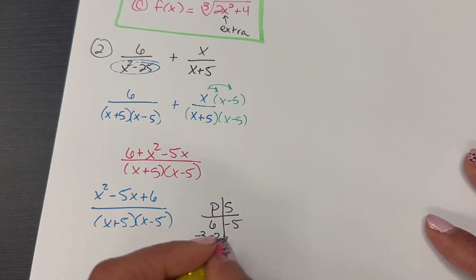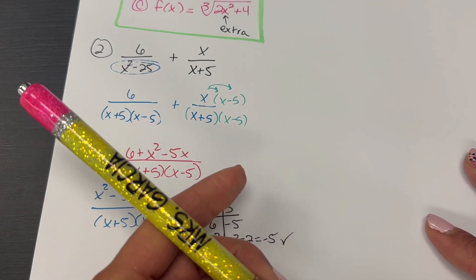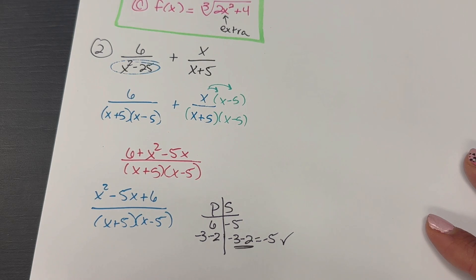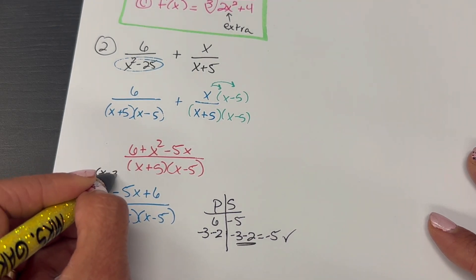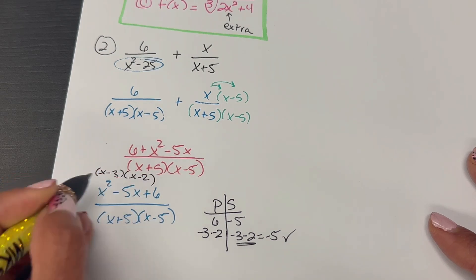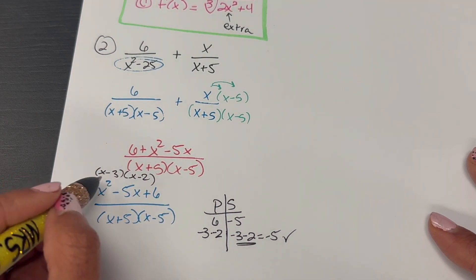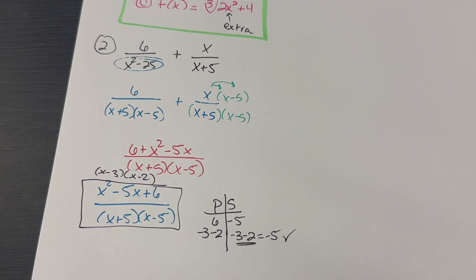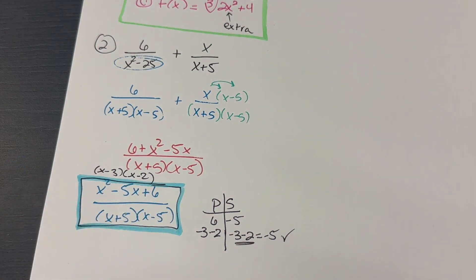Two numbers that multiply to 6 and add up to negative 5 are negative 3 and negative 2. Negative times negative is positive; negative 3 minus 2 adds up to negative 5. So my factors are X minus 3 and X minus 2, but nothing cancels with the denominator. So I'll just leave my answer as X squared minus 5X plus 6 over X plus 5, X minus 5. And that's number 2.